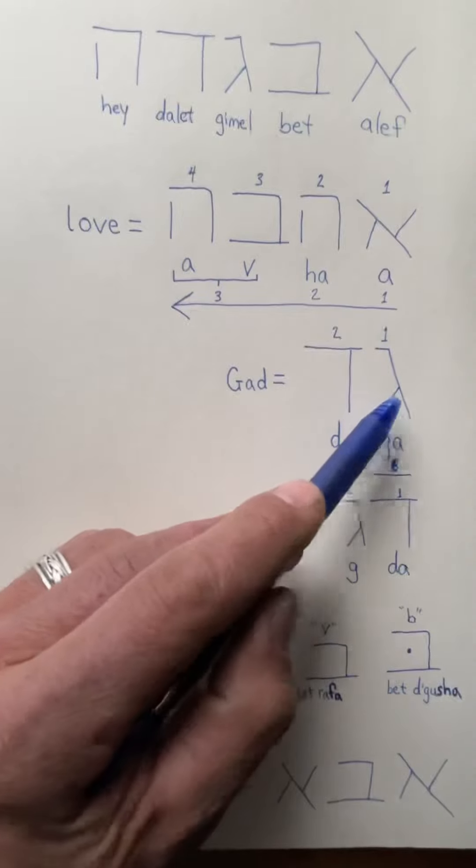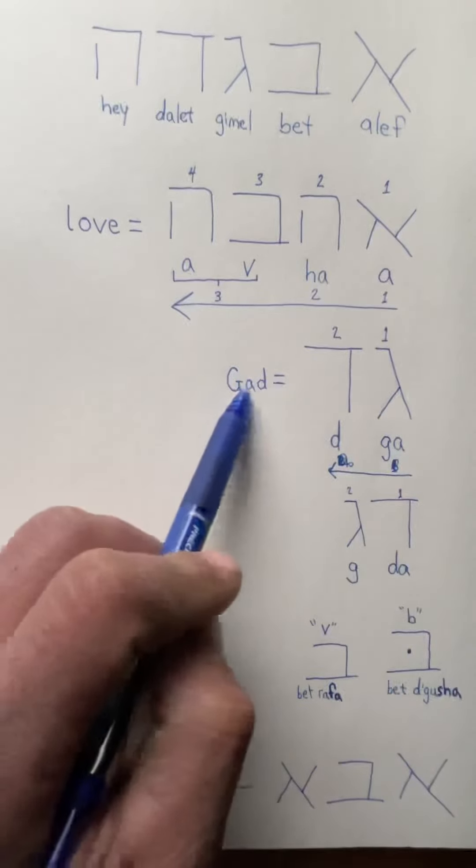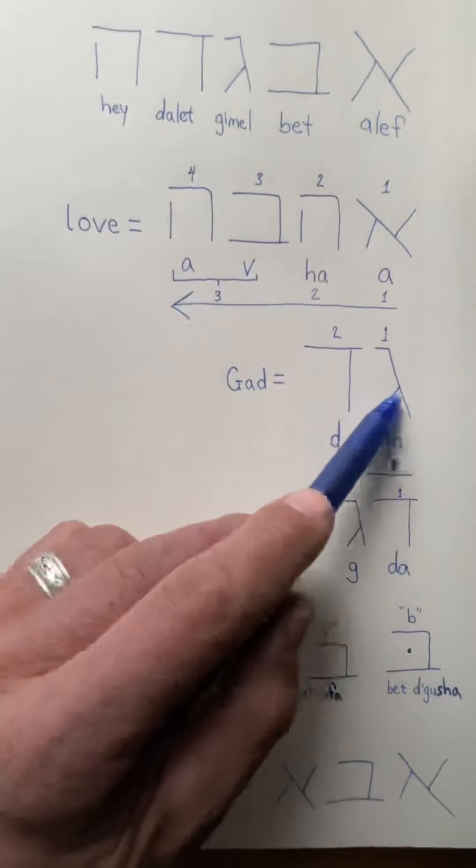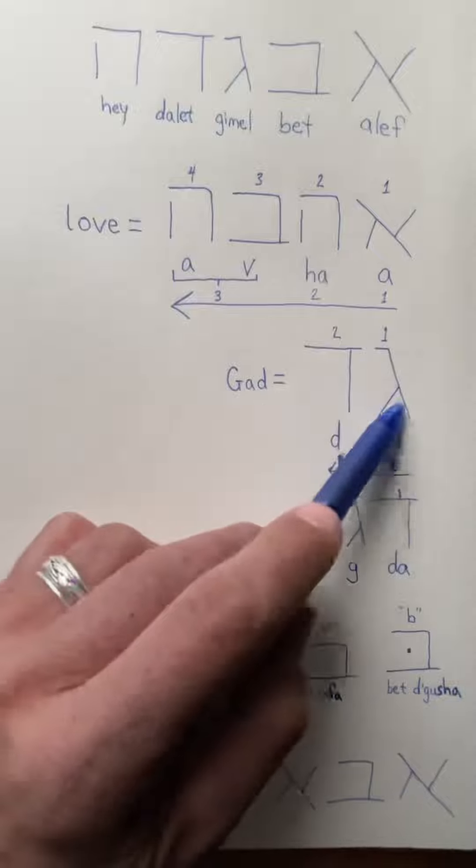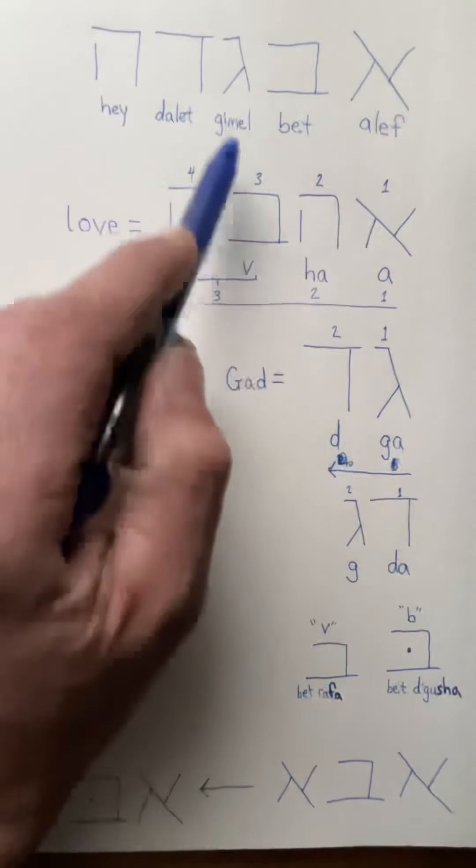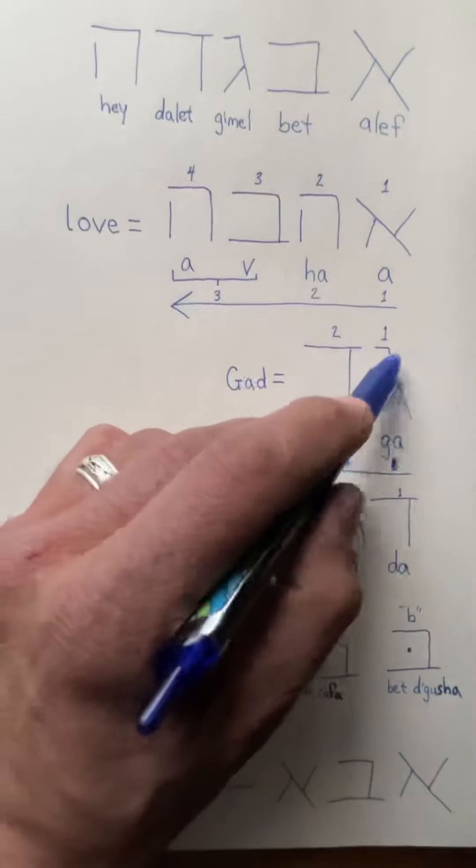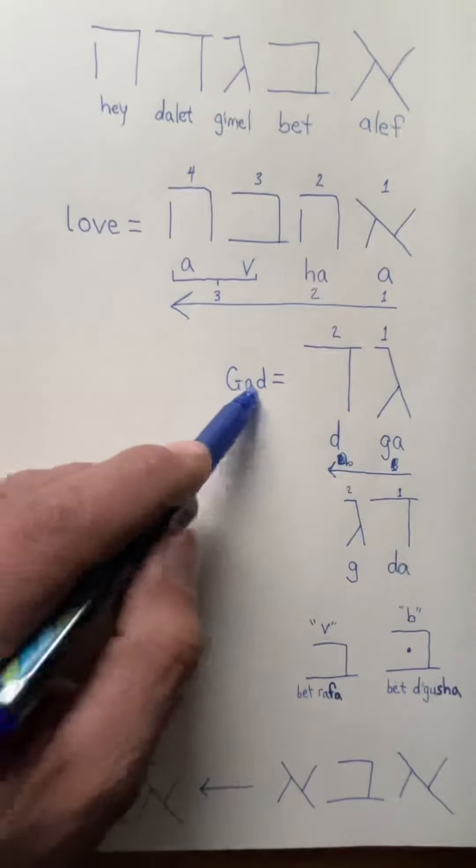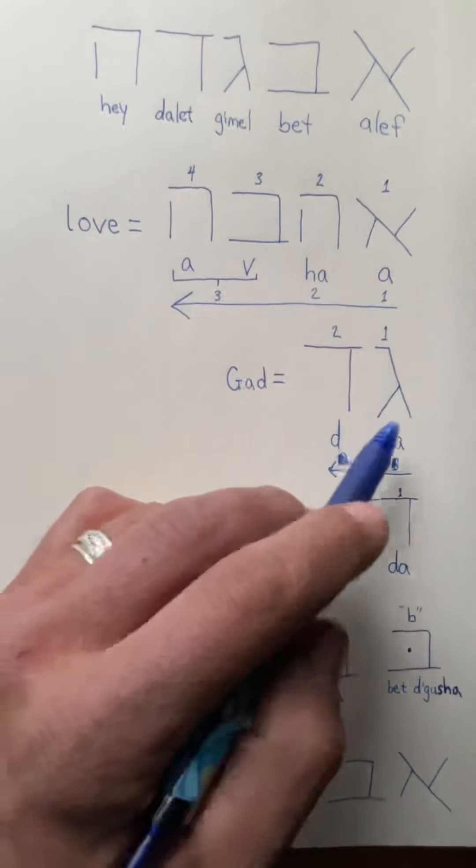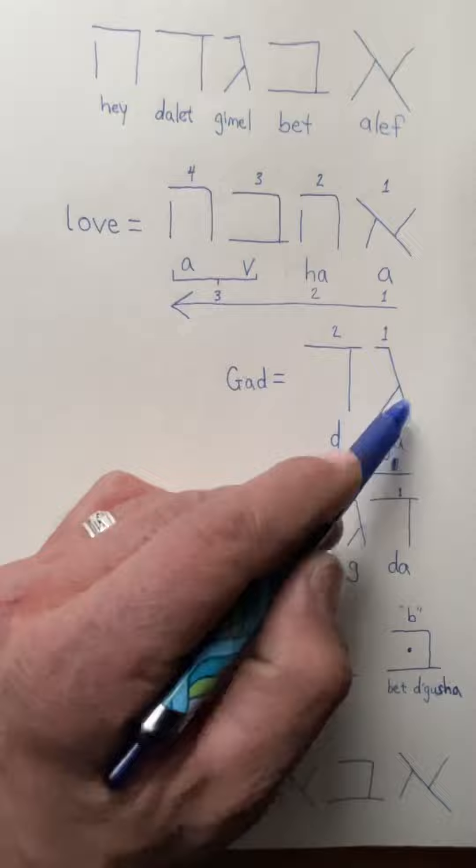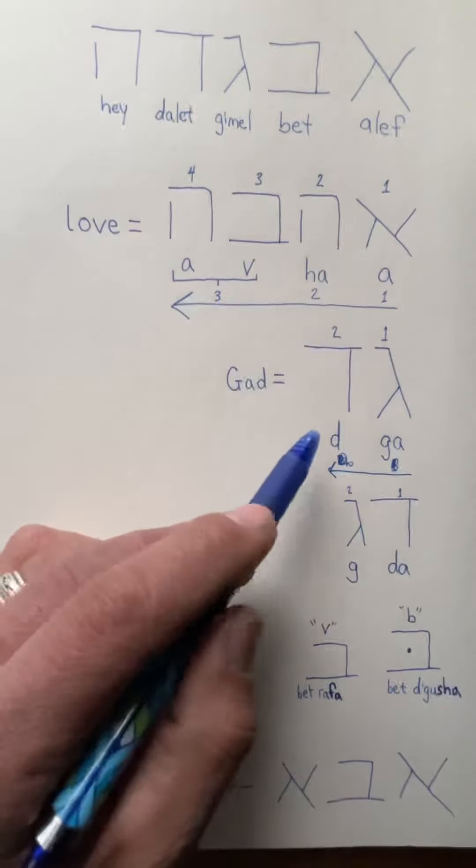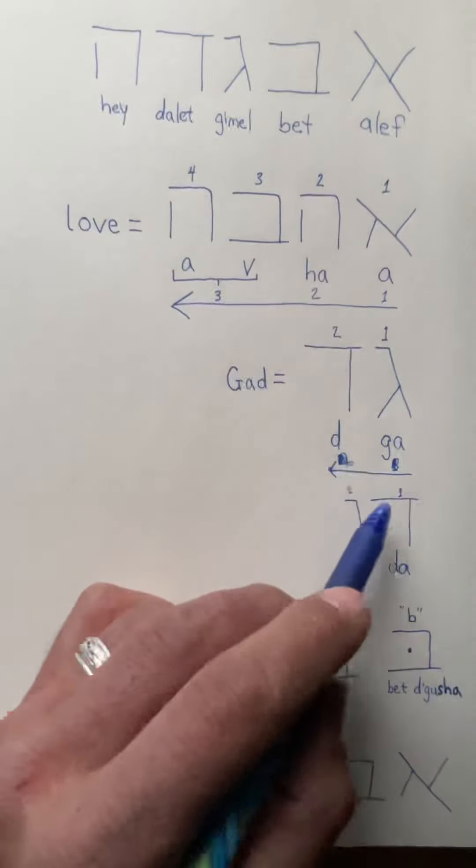I also mentioned the name Gad, one of the twelve sons of Jacob, and how it's spelled with the letters gimel and dalet. This is in order: aleph, bet, gimel, dalet - that's the name Gad. So the name Gad, not God as in God Almighty, but Gad. We would say Gad maybe in English, but in Hebrew Gad is spelled gimel-dalet.